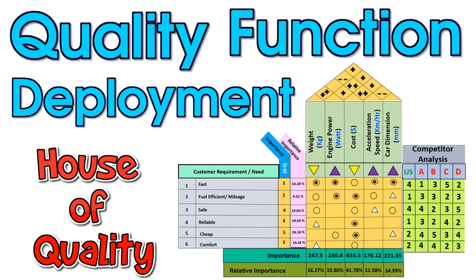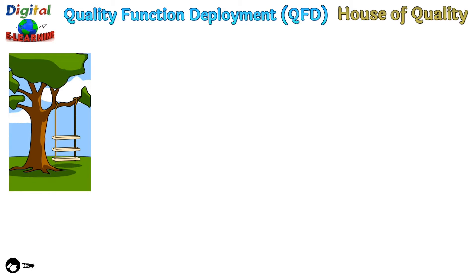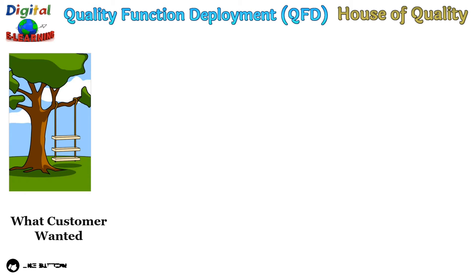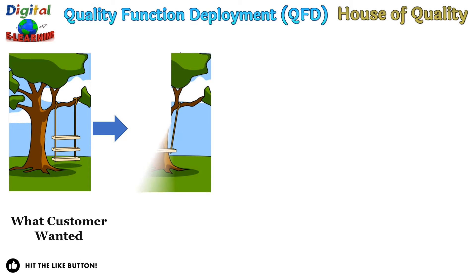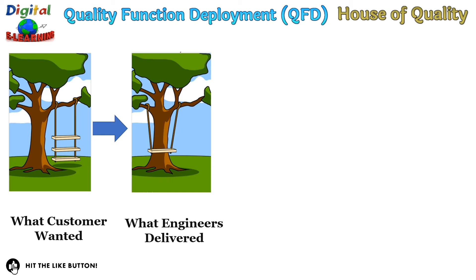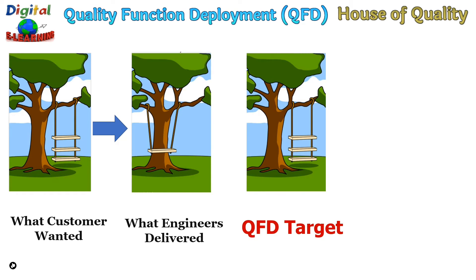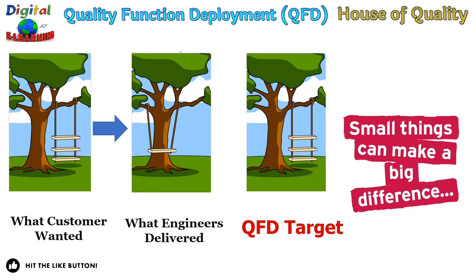In this video, we are going to look at how to construct a House of Quality with the help of an example. Before we start designing our product or device, we need to know what the customers actually want and what our engineers are delivering to the end customers. QFD helps us in targeting what we should actually be delivering, and these small things in Quality Function Deployment can make a big difference to the end result.